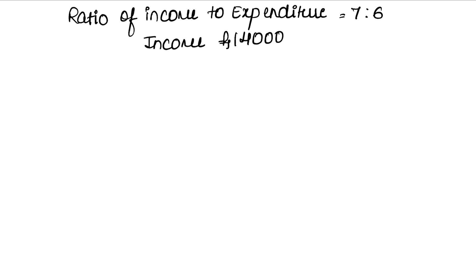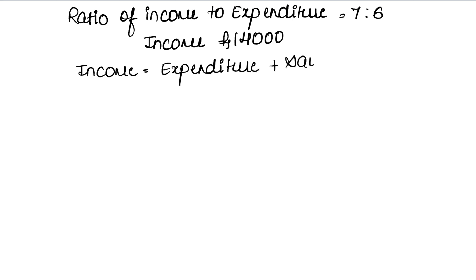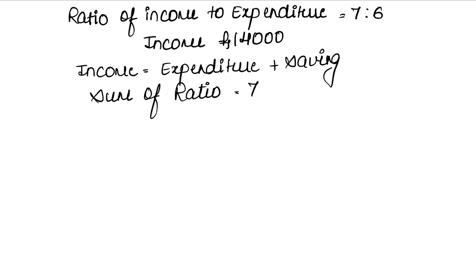Now, as we have seen from the last question, income is formed by adding expenditure plus saving. So the ratio of income is the sum of ratio. The sum of ratio is 7, because the ratio of income was 7. Now we can find expenditure from income.